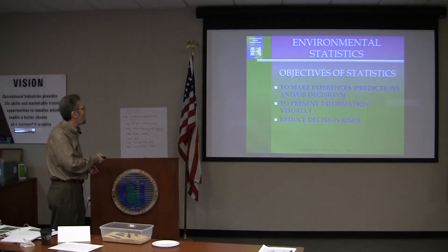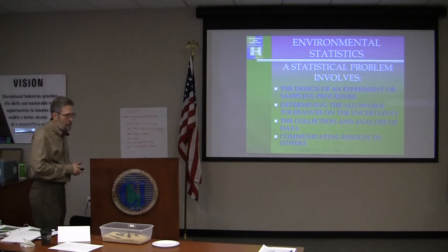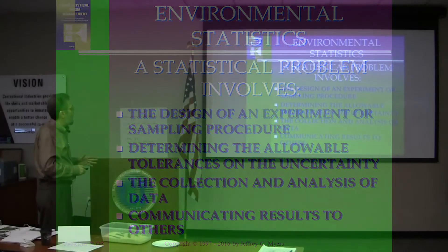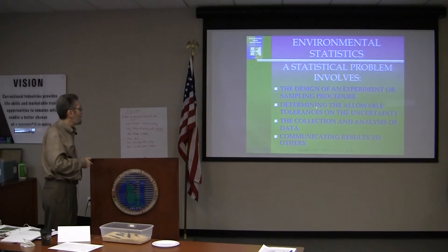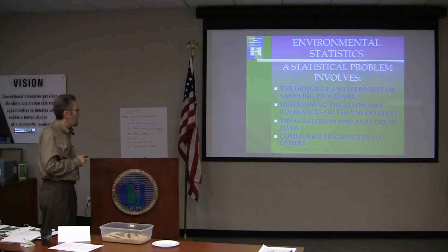Ultimately, we're trying to reduce the decision risks. There are several aspects we usually go through. We design a sampling program — I think you're getting the feel with incremental sampling that you just don't say 'go get me some soil samples.' You should be designing that sampling program, everything from the material collect, to the subsample, to the lab protocols. Through the DQO process, we put in an allowable level of uncertainty. We know we're always going to have uncertainty — it's just the way life is — we just try and manage it.